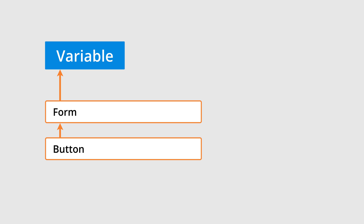The variable will let us access information about the button that someone has clicked on our website. For example, we might want to track people clicking a button in a form. We can use a variable to access details about the particular form someone is using on our website.